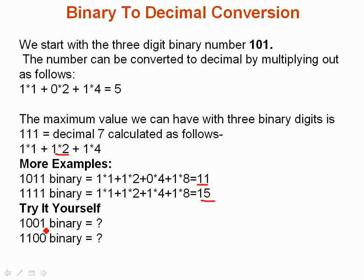So here's a couple to try yourself. You may want to pause the video while you do it. So we've got 1001, which is 1 times 8 and 1 times 1, which is 9. And we have 1100, which is 1 times 8, 1 times 4, which is 12.